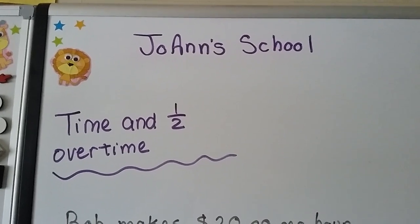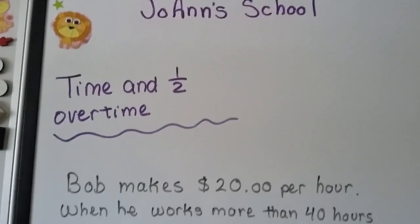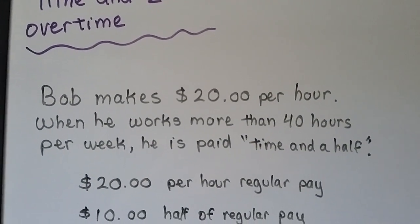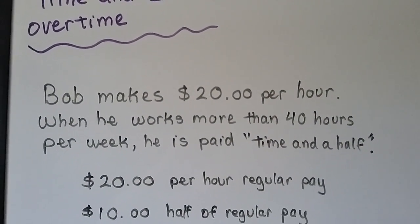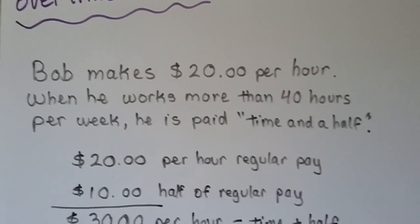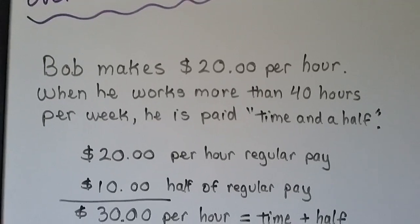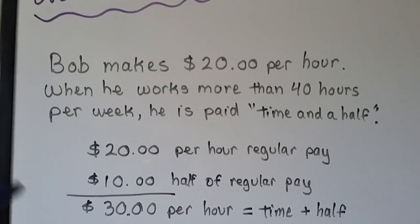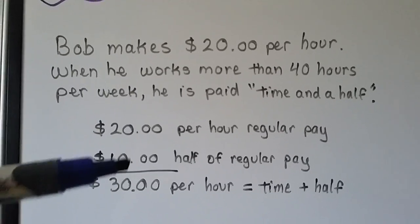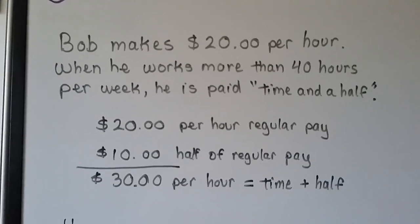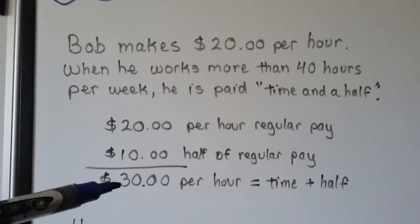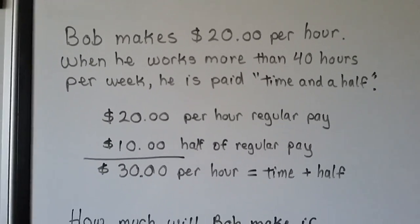This is how to figure time and a half overtime. When Bob makes $20 per hour, when he works more than 40 hours per week, he's paid time and a half. So if he makes $20 per hour for regular pay, then half of that would be $10. So time and a half would be $30. We add the regular hourly pay with half of the hourly rate to get the $30 for time and a half.